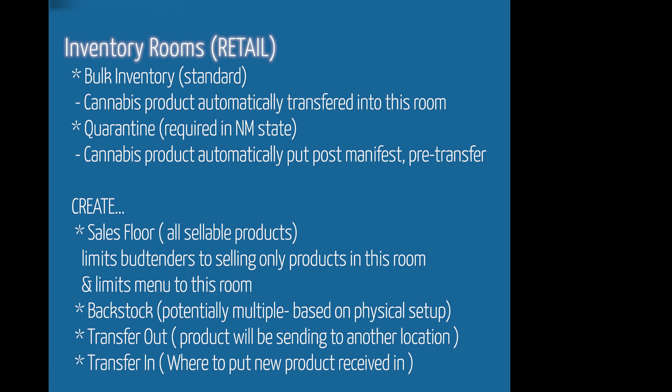These are some of my basic recommendations for retail. Your Biotrack point of sale comes stock with a bulk inventory, where all product is automatically received into initially. It also comes stock with a quarantine, which is where all product gets moved to when you're sending a transfer. In addition to that, you want to create a sales floor for all the sellable product, so your bud tenders are only facing product that they can actually sell and that is physically on the sales floor.